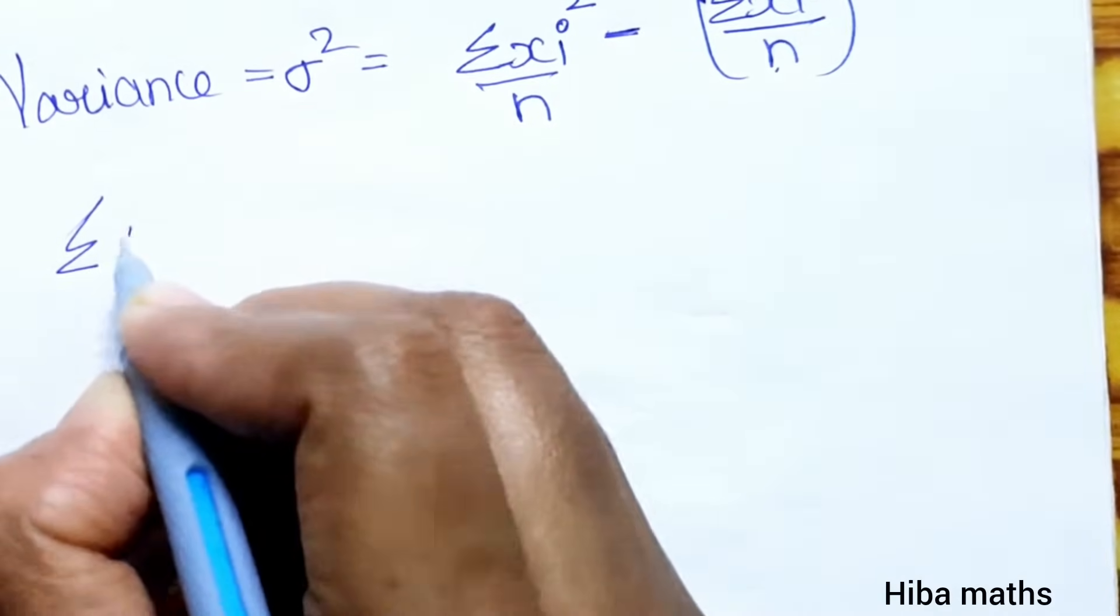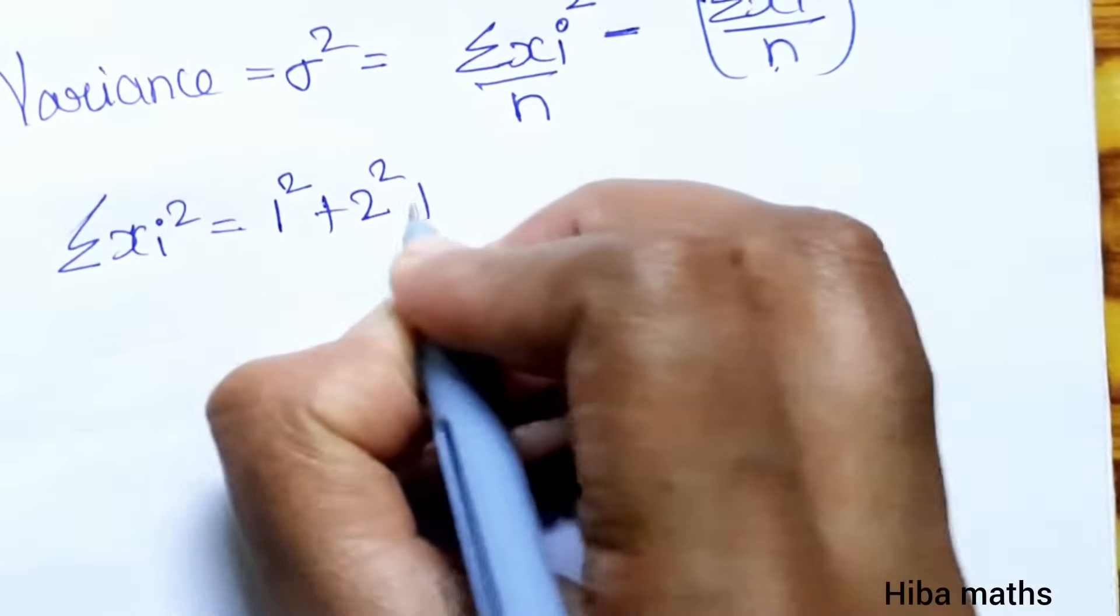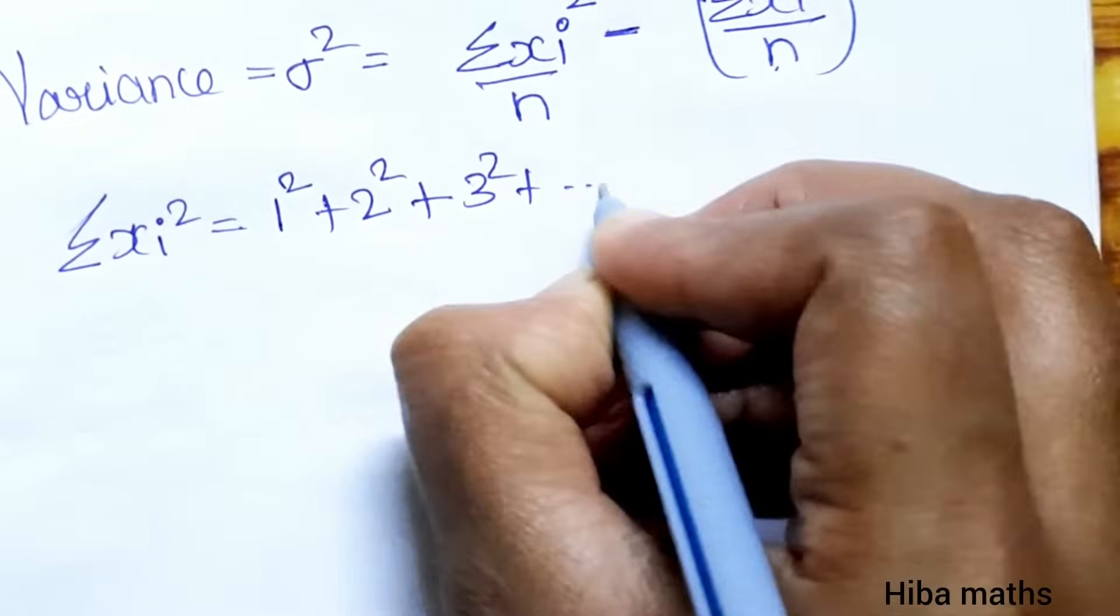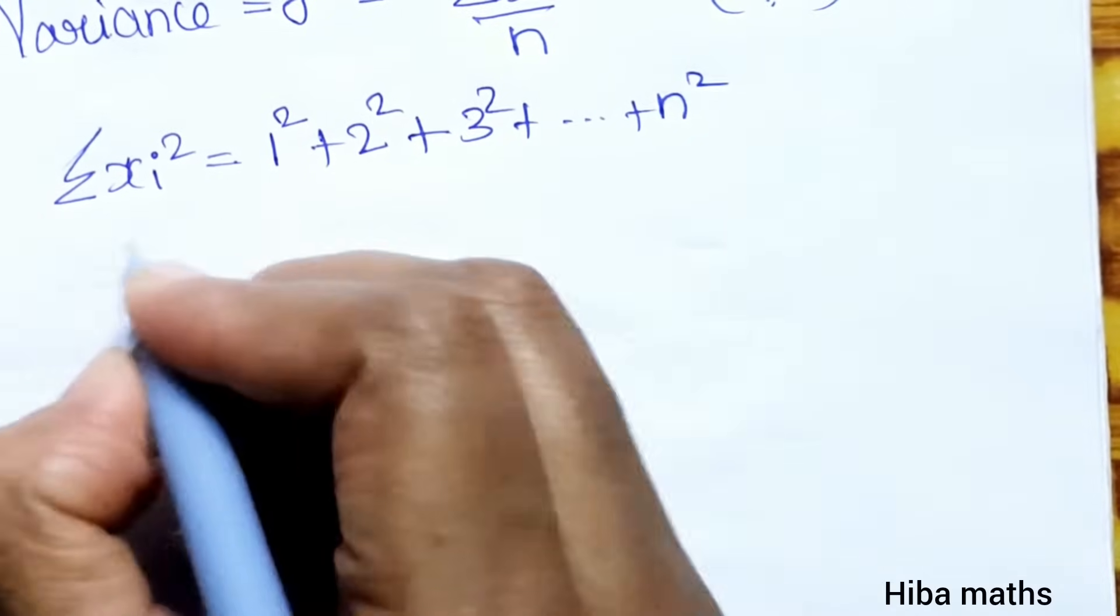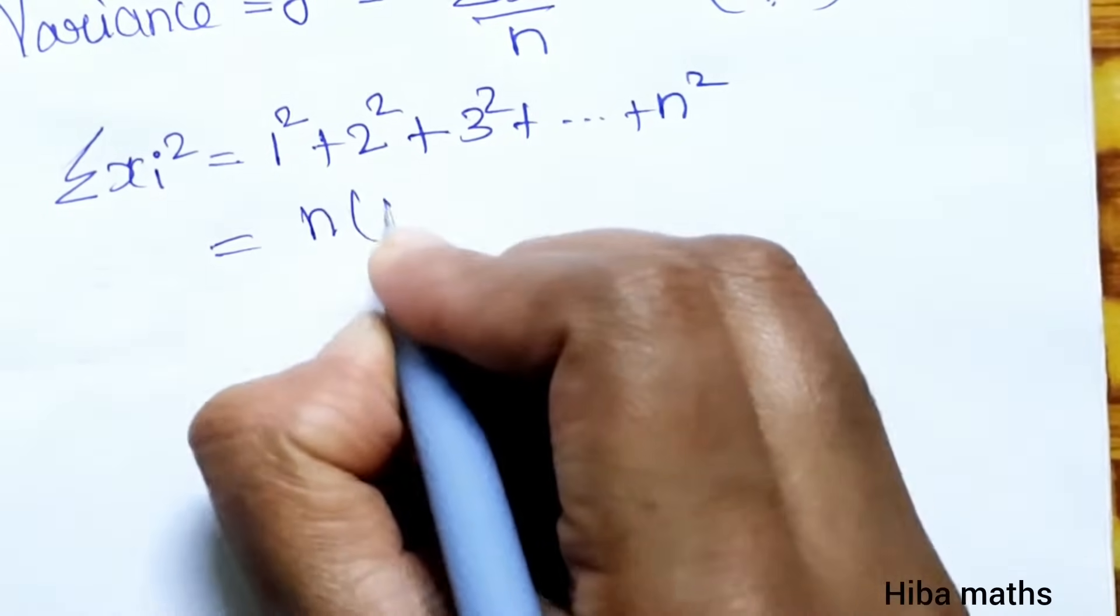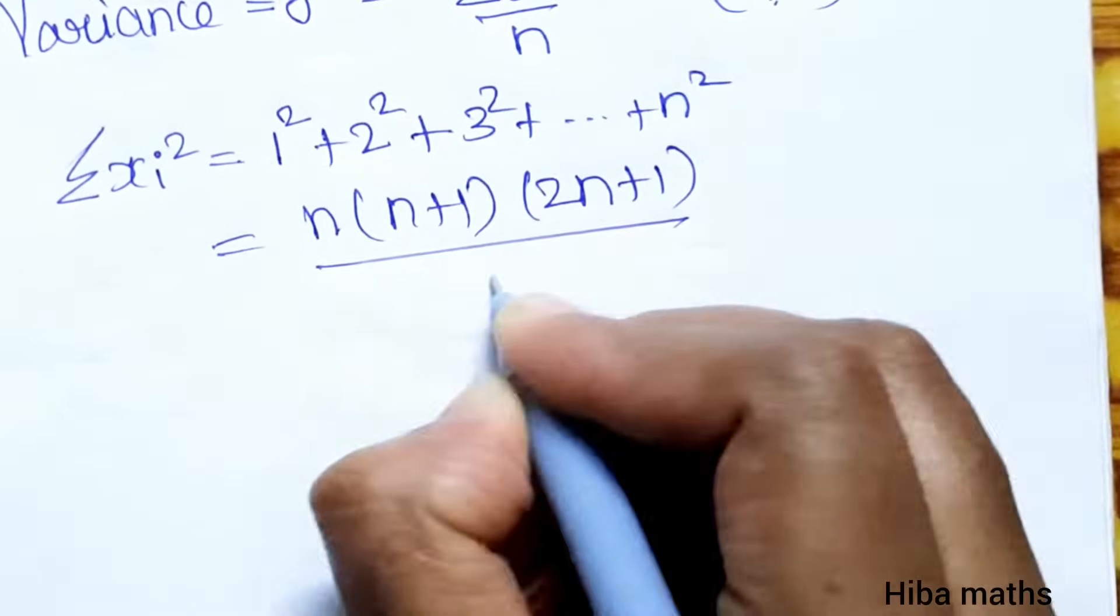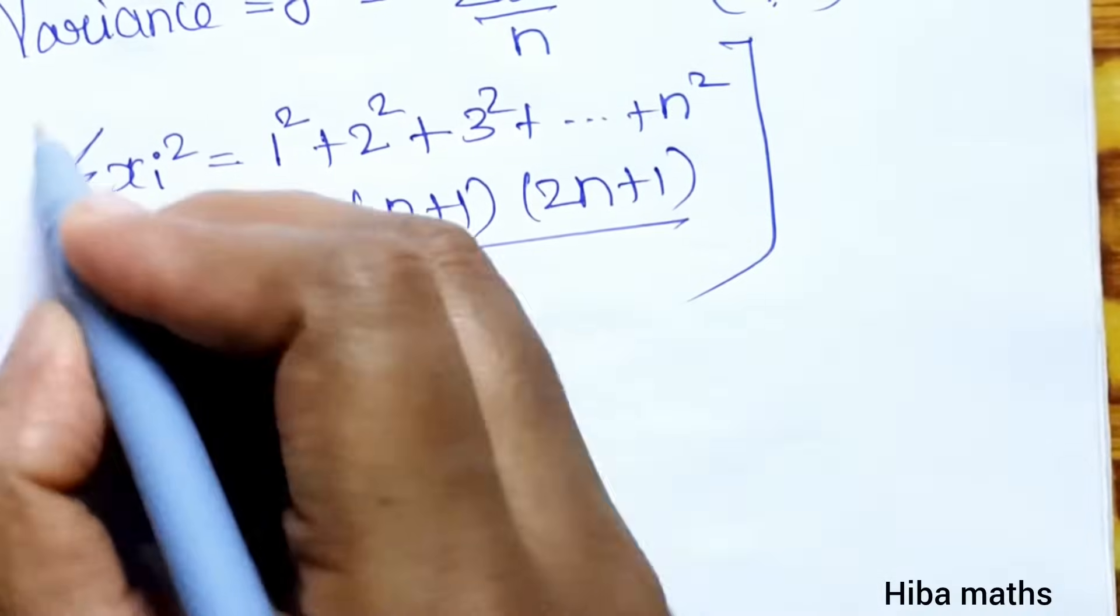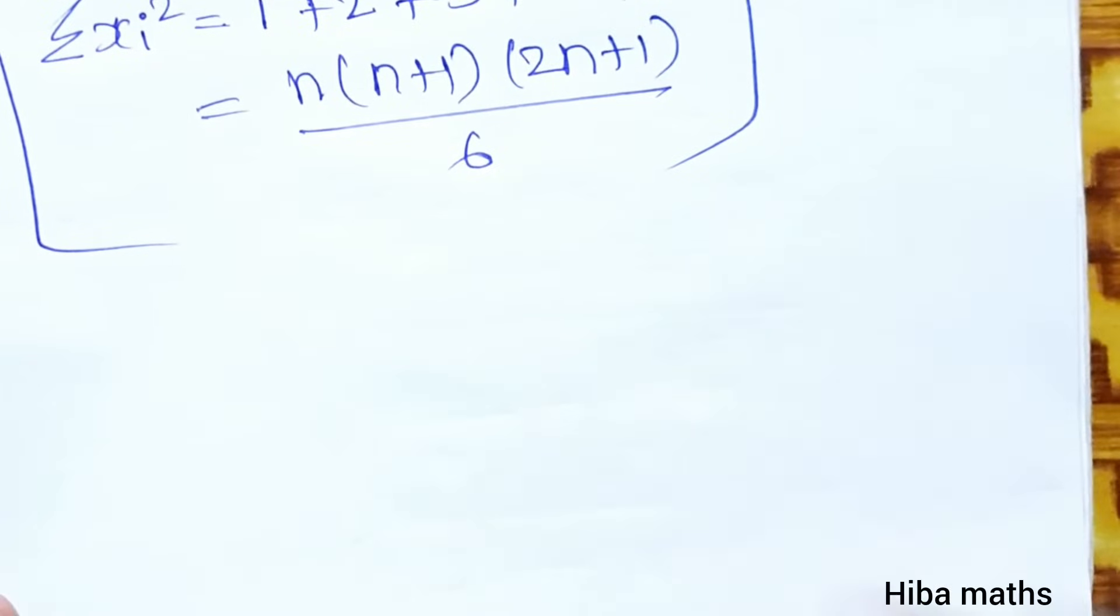Summation of x i square: 1 square plus 2 square plus 3 square up to n square. In the condition, we know this value: n into n plus 1 into 2n plus 1 divided by 6. This is from special series, second lesson. Recall.